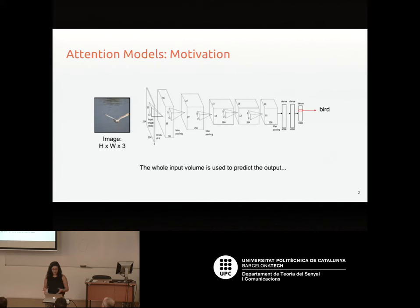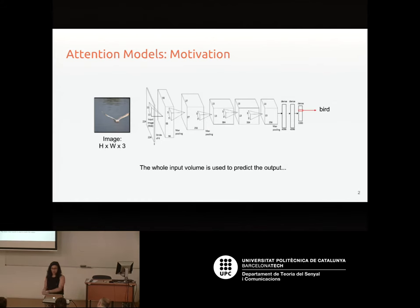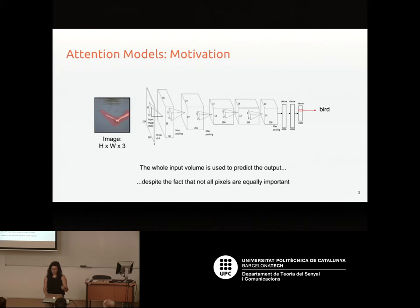The motivation for attention models: most of the networks we've seen so far take an input — mostly an image — and use the whole input to predict an output. So you have an image of a bird and you predict 'bird'. But not the whole input contributes equally to this output.